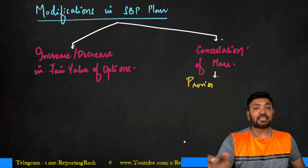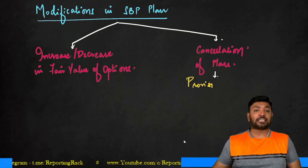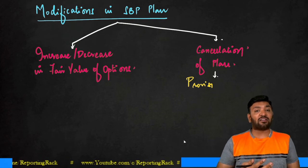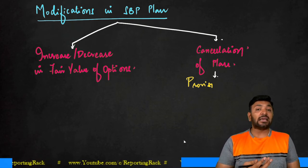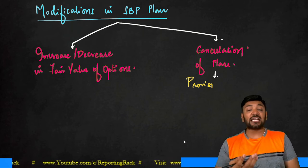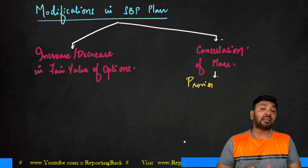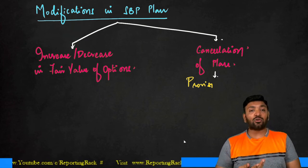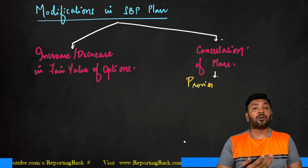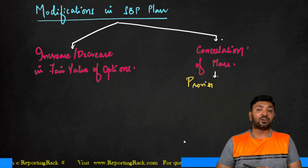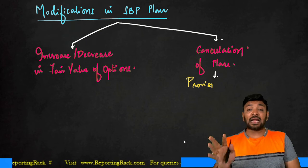So what we were discussing was regarding modifications of a share-based payment plan. There could either be an increase or decrease in the fair value of an option. Suddenly there is a fall in the fair value of the shares or market price of a share, so I change the exercise price. Automatically the fair value of the options will increase or decrease. Sometimes that could happen where I included more number of employees who are eligible to receive the plan, then automatically there is an increase or decrease.